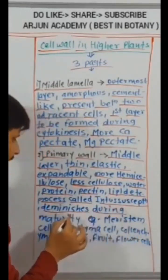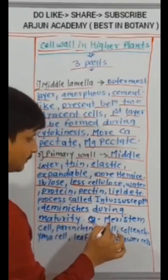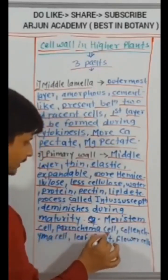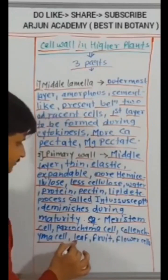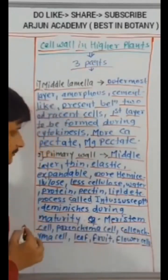Process called intussusception. Diminishes during maturity. For example, meristem cell, parenchyma cell, collenchyma cell, leaf, fruit, flower cells.